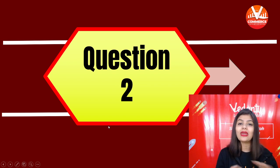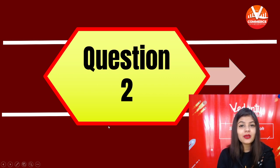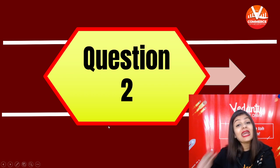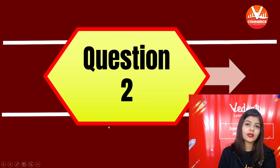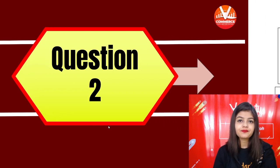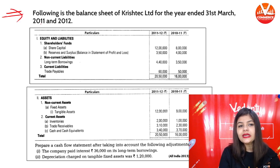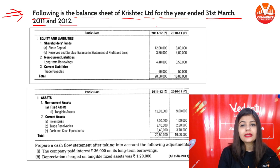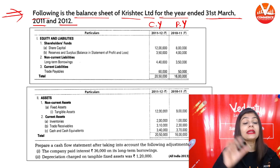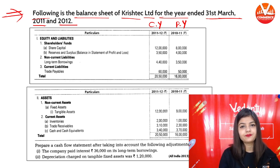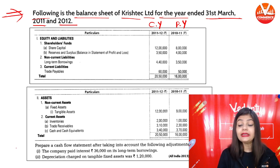Now coming to the second question. We will be a little quicker since I explained the first question in detail. The question is: the following is the balance sheet of Frishtech Limited for the year 31st March 2011 and 2012. This is your previous year 2010-11 and this is your current year. Always write down current year and previous year clearly.